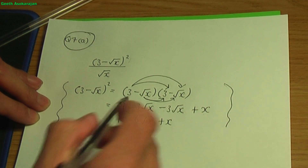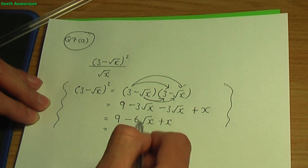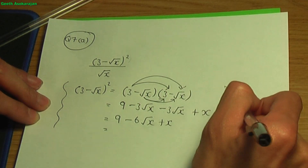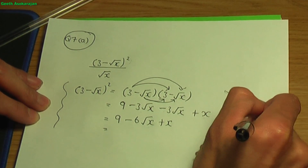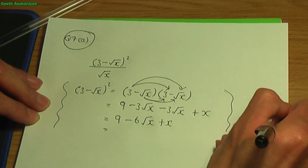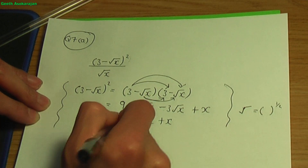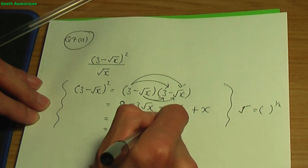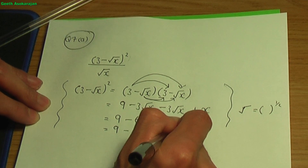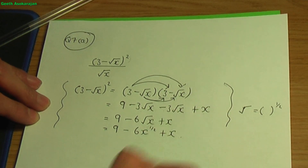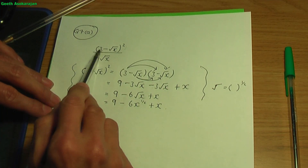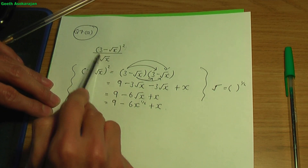I'm going to go one stage further. Instead of having roots, let me rewrite root x as x to the power of half. Remember, root is the same as the term to the power of half. So I'll write it as 9 minus 6x to the half plus x. So this is the side calculation for the expansion of the numerator.